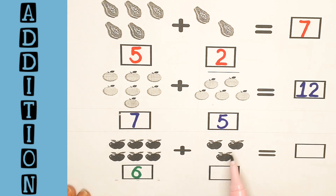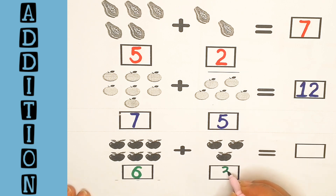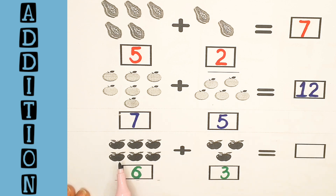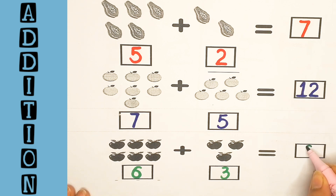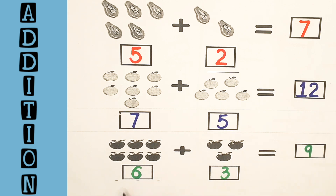And one, two, three — here are three apples. Now we will find the total number of apples. Let's count: one, two, three, four, five, six, seven, eight, nine. So the total number of apples is nine. Six and three is equal to nine.